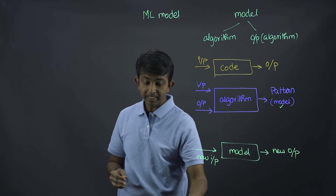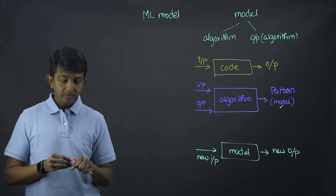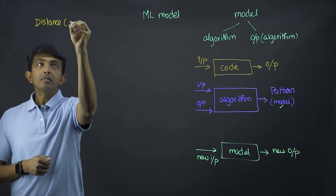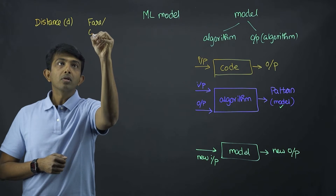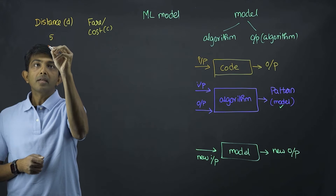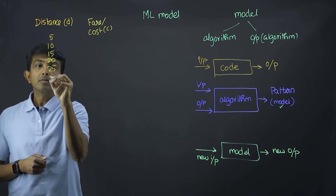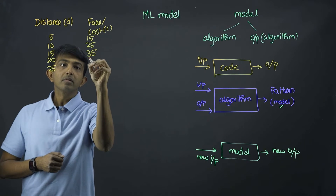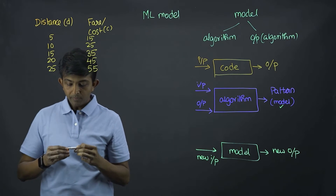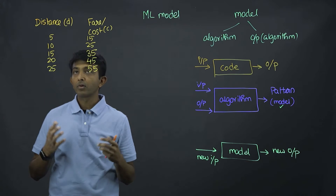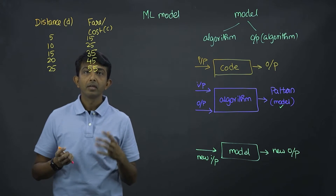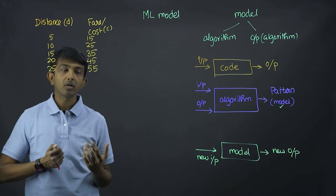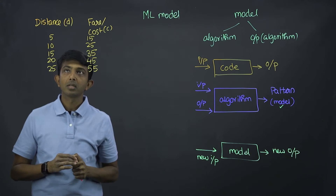Let me explain this more with a dataset. Let's say we have a dataset on taxi fares where you have the distance traveled and what was the total fare or cost. For anyone accessing this data, we would understand that for distances like 5, 10, 15, 20, and 25, you know what the total cost for the fare ride would be. Now if you want to predict the cost for new data, we need to understand what could give the total cost given the distance.